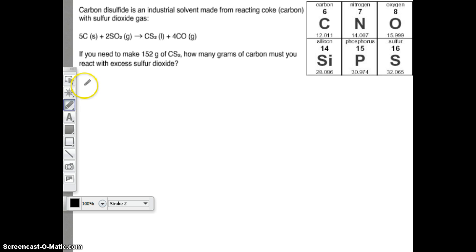Start by writing down what you know. 152 grams of CS2, make it a fraction. What has to go on the bottom of my next fraction is grams of CS2. Now let's look at what we're converting to. We want to go to grams of carbon. We started with that, we want to go to carbon. Anytime we are switching from one chemical to the next, what do we need? The magic of the mole.